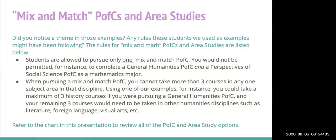The rules for mix and match PFCs and area studies are: students are allowed to pursue only one mix and match PFC — you cannot complete both a General Humanities PFC and a Perspectives of Social Science PFC as a mathematics major. When pursuing a mix and match PFC, you cannot take more than three courses in any one separate area. For example, a maximum of three history courses if pursuing General Humanities; the remaining three must be in other humanities disciplines such as literature, foreign language, or visual arts.